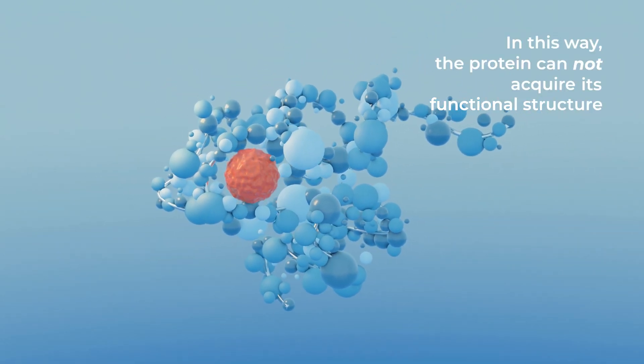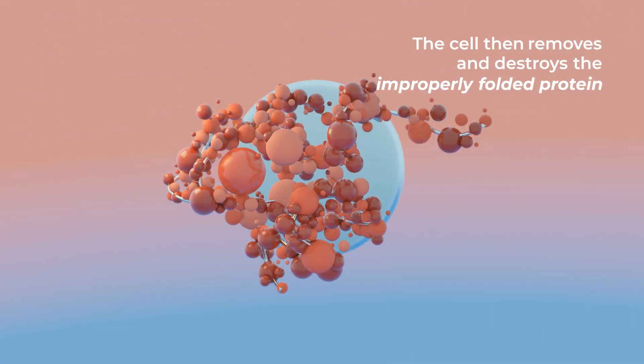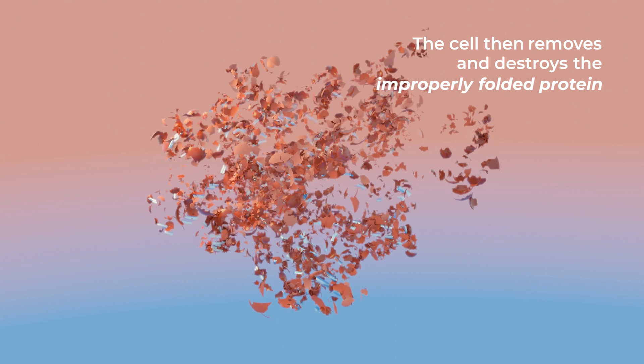In this way, the protein cannot acquire its functional structure. The cell then removes and destroys the improperly folded protein.